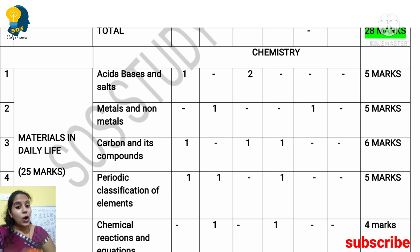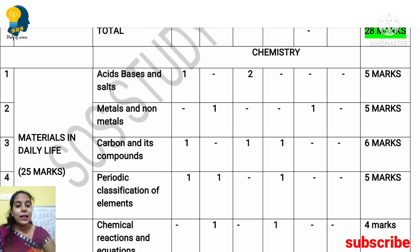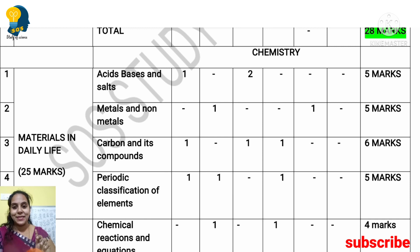Periodic Classification of Elements carries 5 marks, and the concepts are very easy. Chemical Reactions and Equations lesson carries a total of 4 marks.